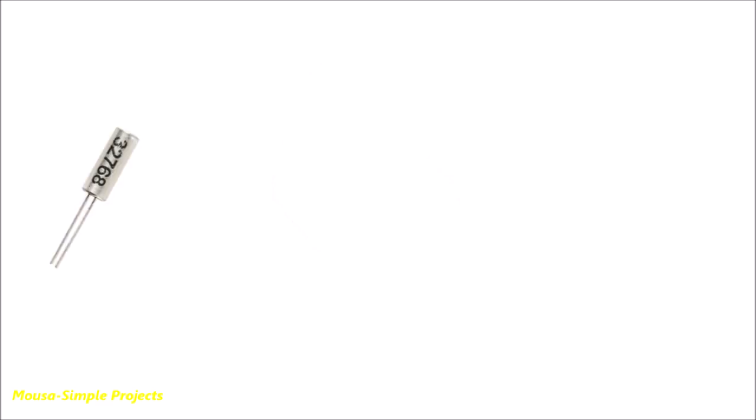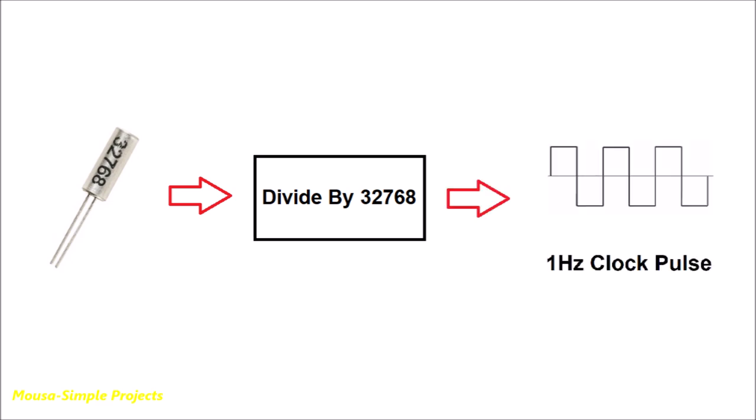To solve this problem, we have to use a crystal with a frequency of 32.7 kHz, then divide that frequency by more than 32,000 times. So the output frequency will be exactly 1 Hz.